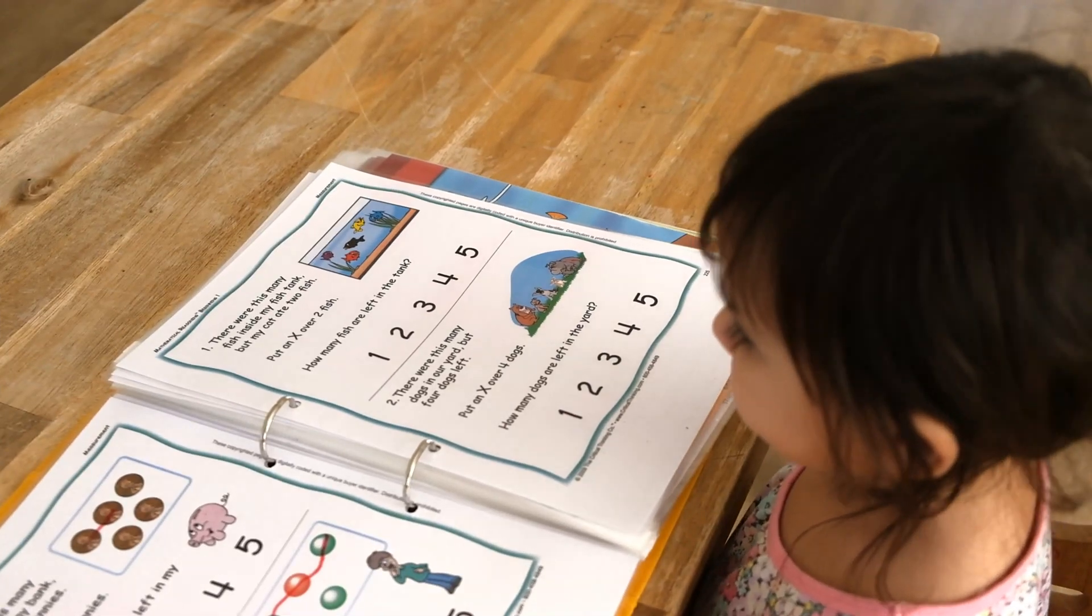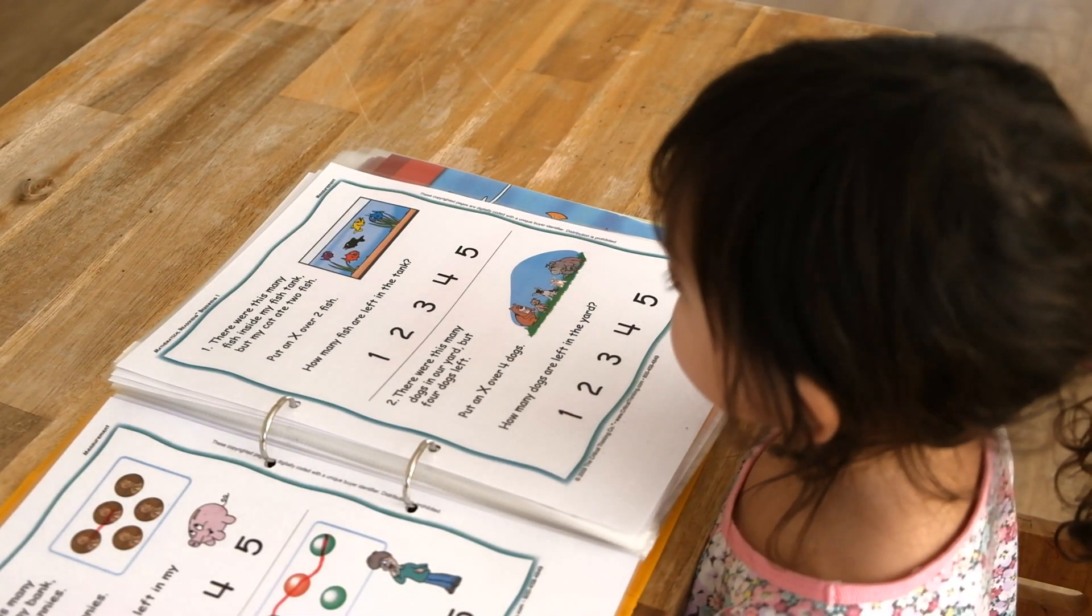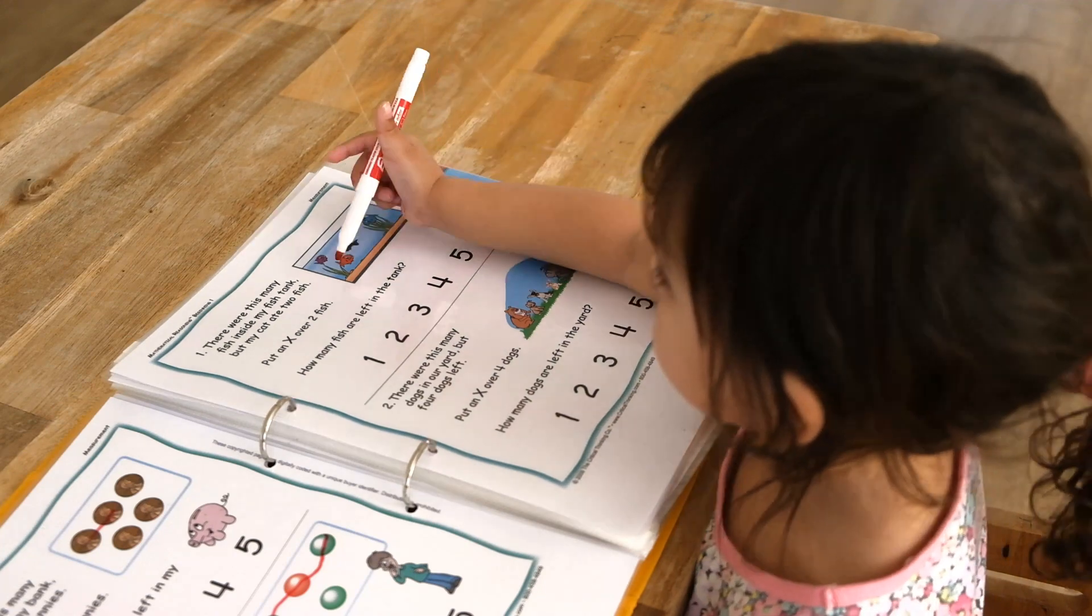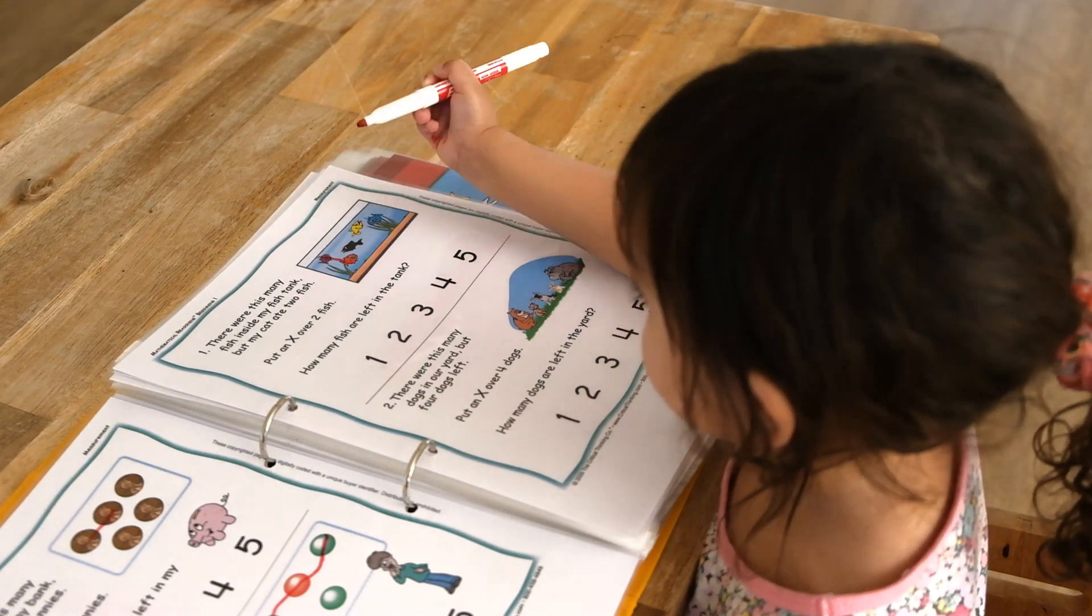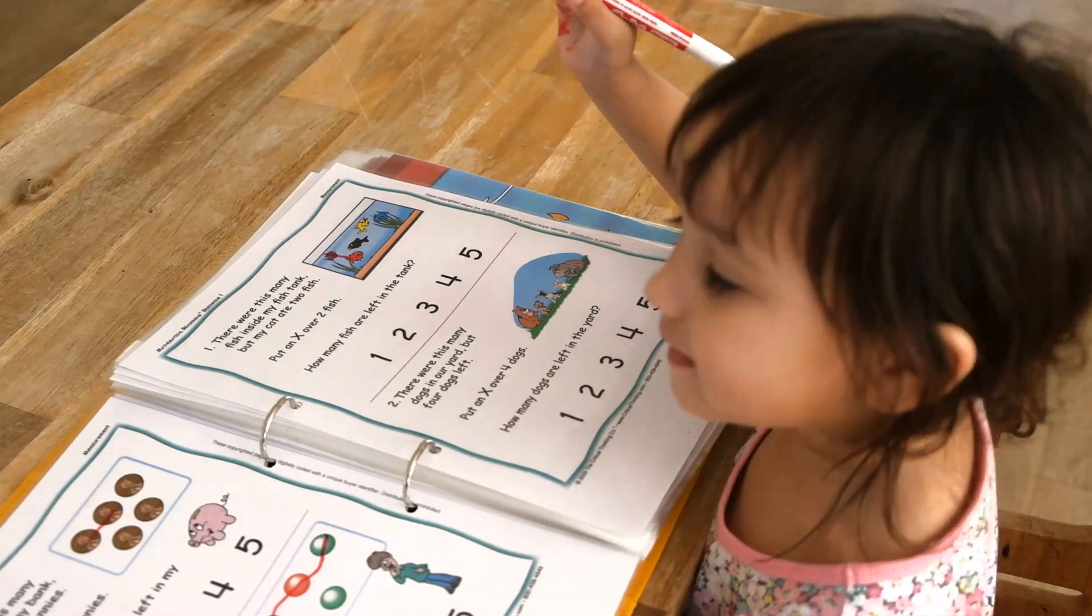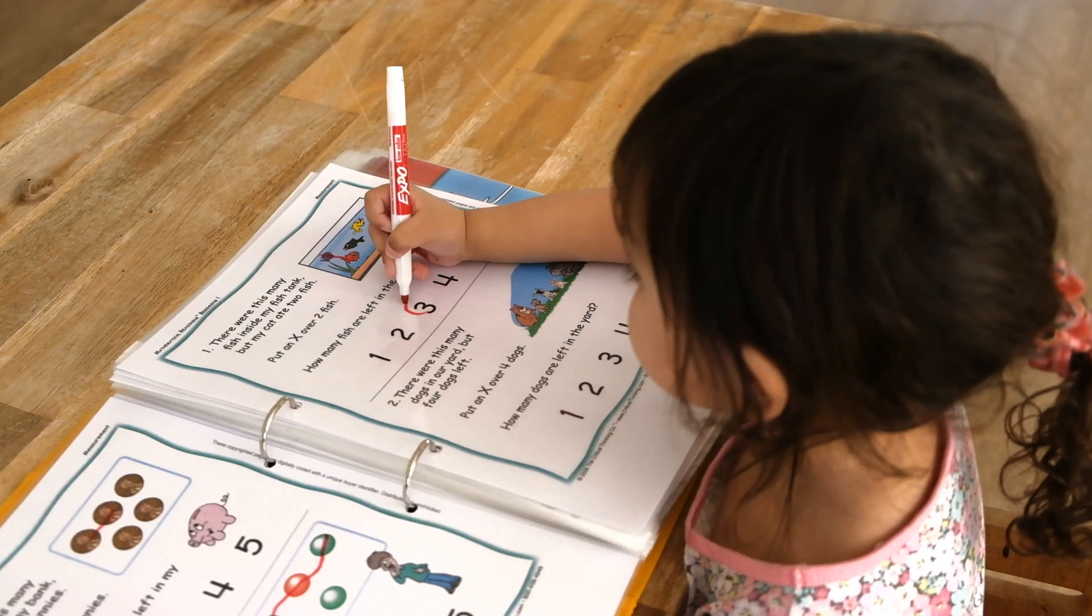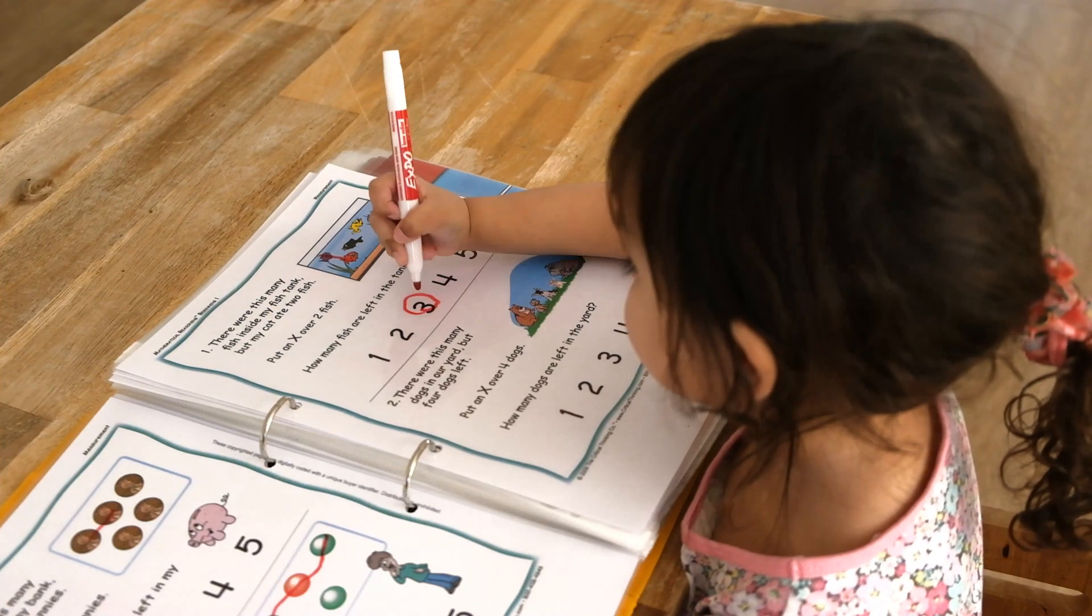There were this many fish inside my fish tank, but my cat ate two fish. Can you cross out two fish? How many fish are left in the tank? Three. That's right. Can you circle three? Number three? That's right.